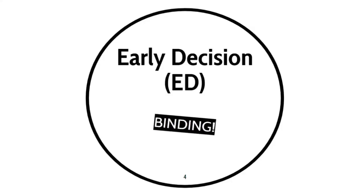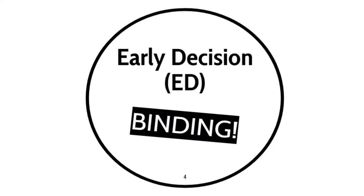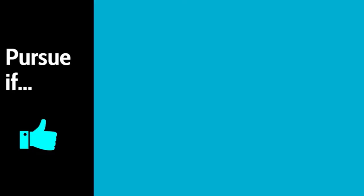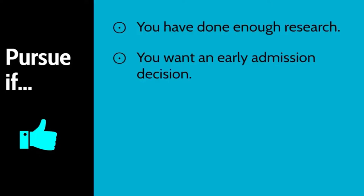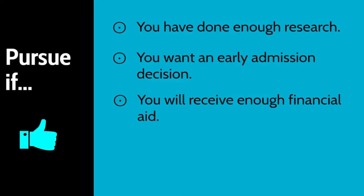Early Decision, ED, is binding, meaning that you are obligated under a contract to attend the college if accepted. You can only apply ED for one college. Pursue if you have fully researched this college, you want an early admission decision, you are absolutely sure you will receive enough financial aid to attend, and or this is the first college on your list — this is where you really want to go.